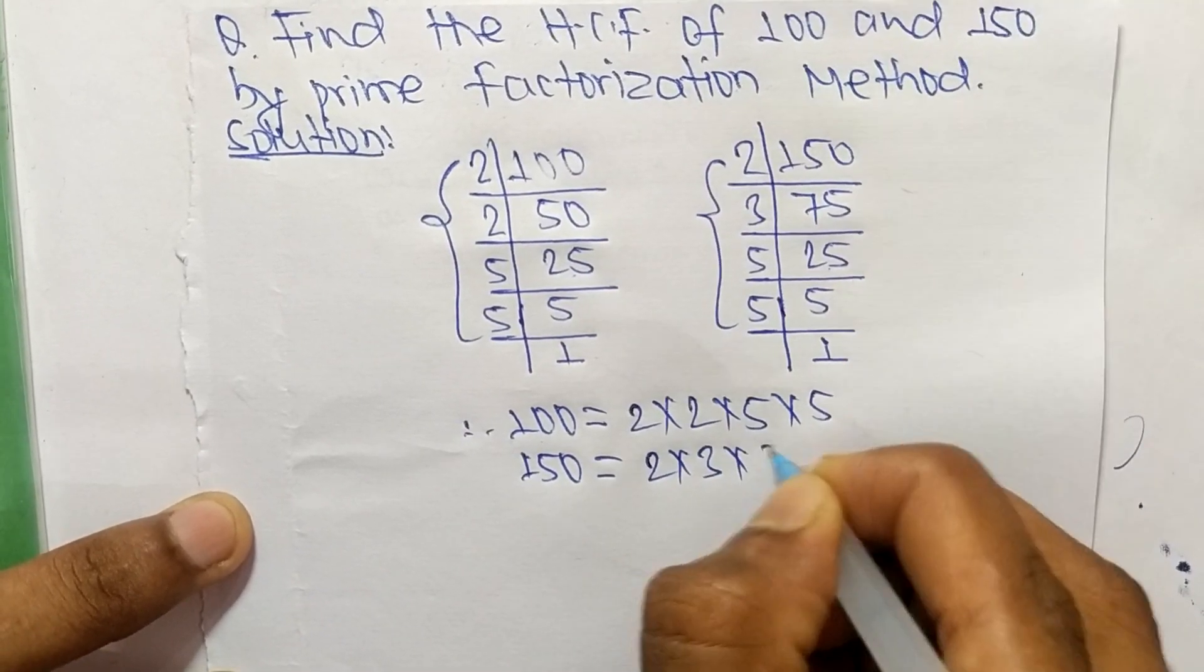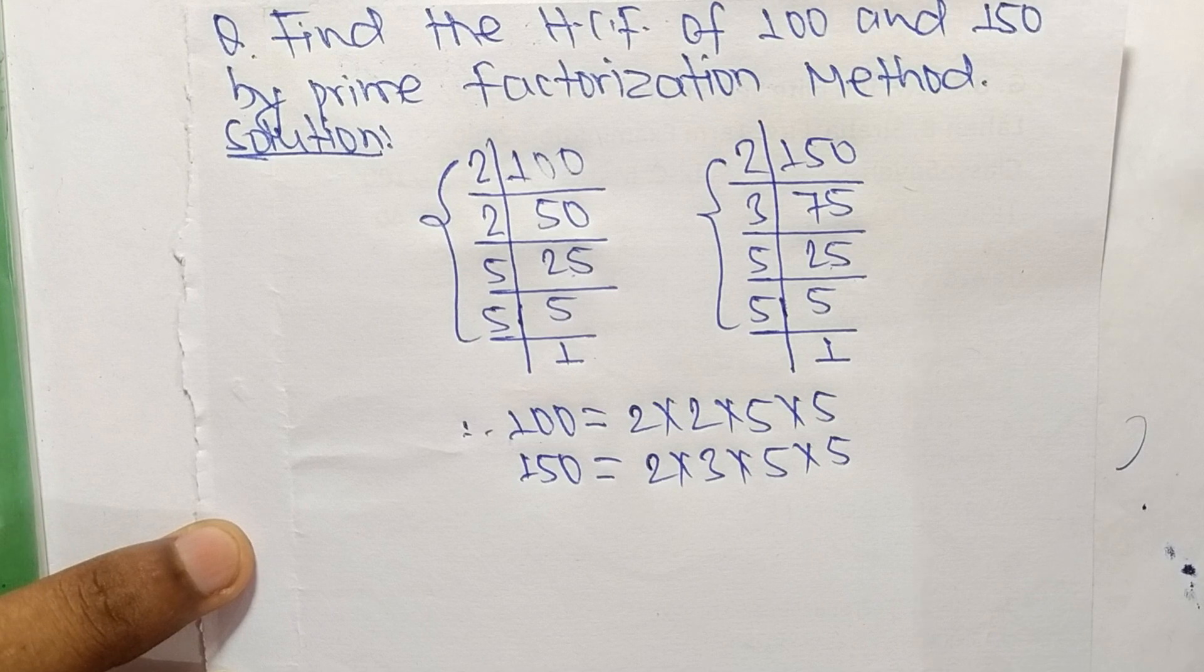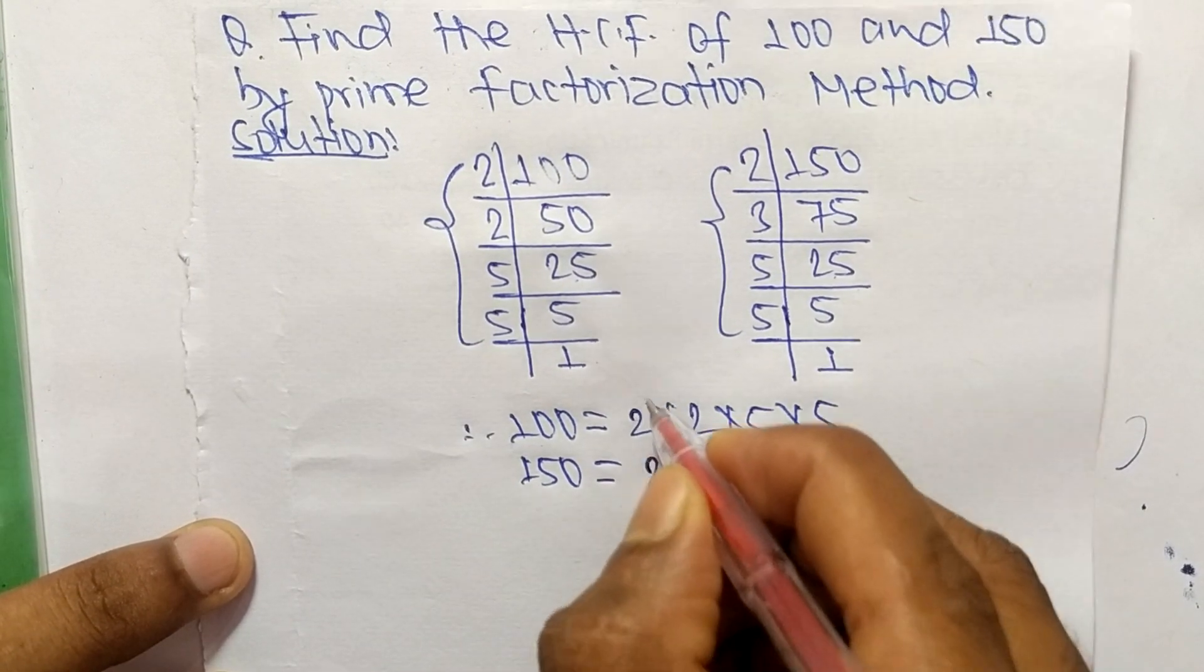So now we select the common factors in these prime factorizations. The common factors here are 2, 5, and 5.